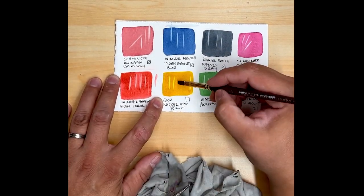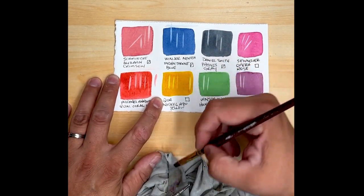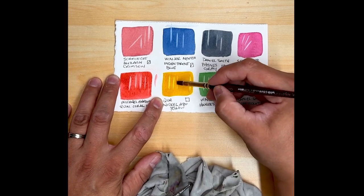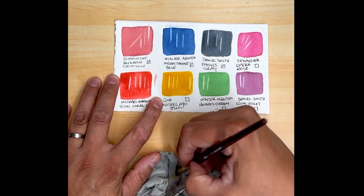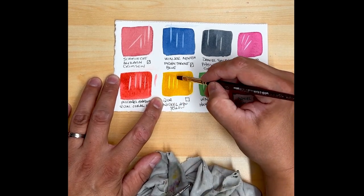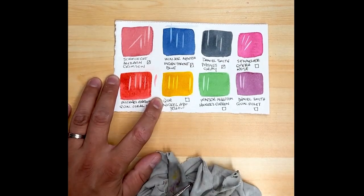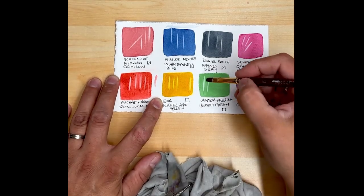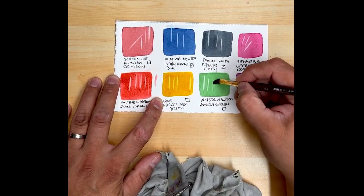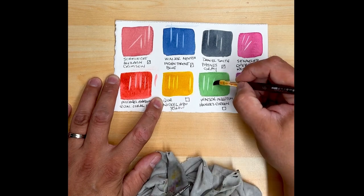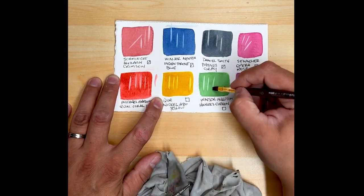The magic erasers are actually akin to an MDF wood product. They actually have little sharp shards in them, which is why they can sometimes pull off your wall paint completely. So they can work, but they're not necessarily your friend.